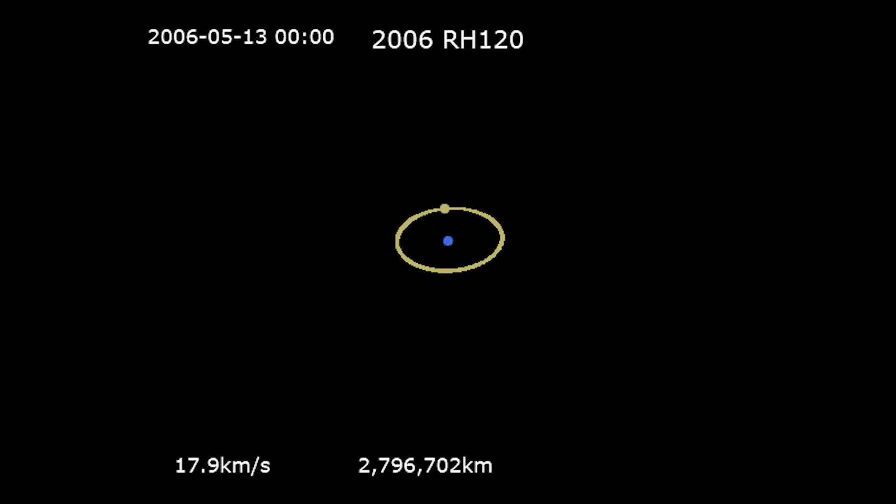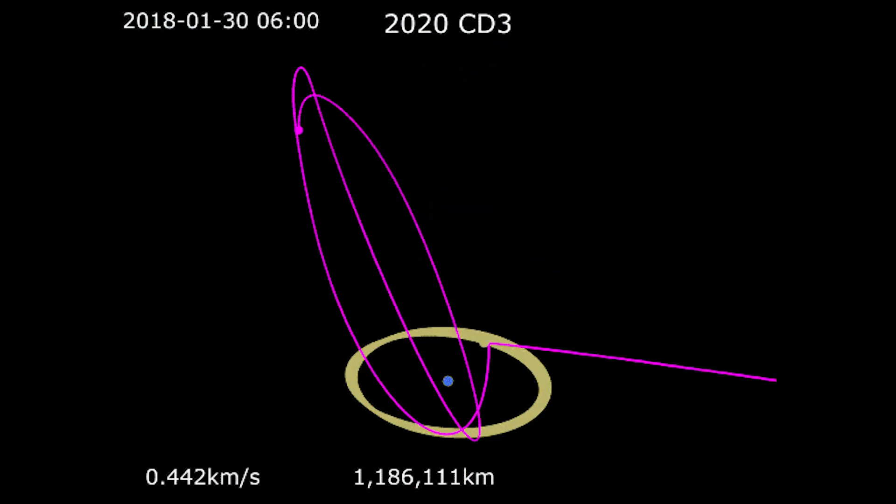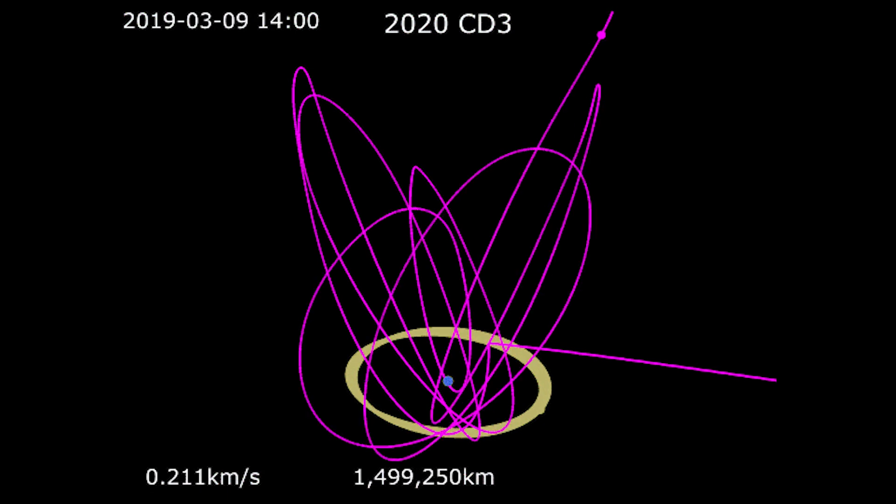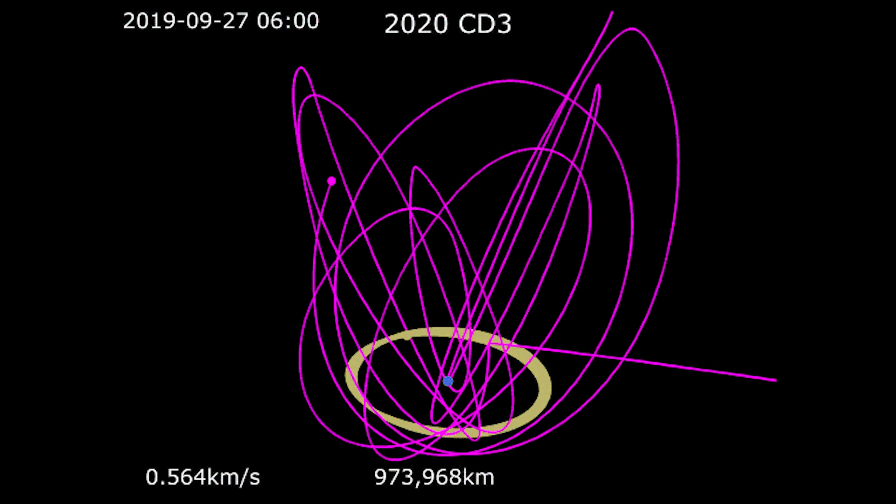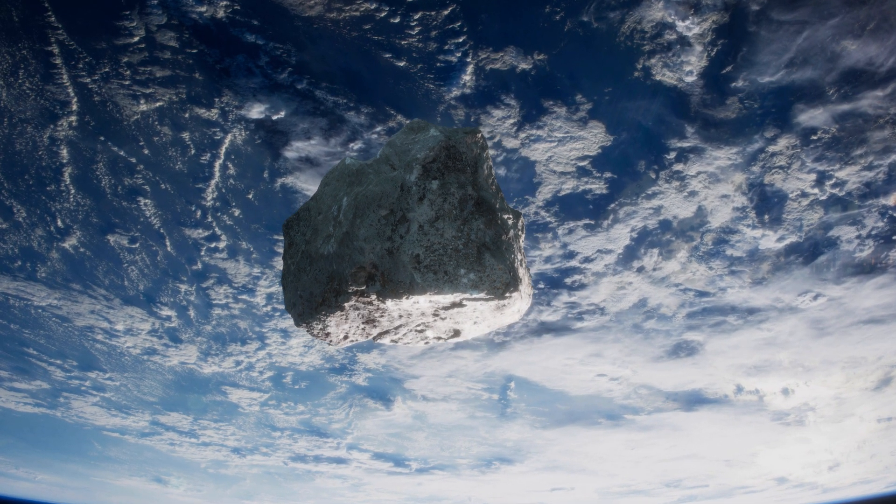The first, dubbed 2006 RH120, visited us from September 2006 to June 2007. The second, 2020 CD3, was with us from 2018 to 2020, but we only noticed it in February 2020, just a few months before it left our orbit.